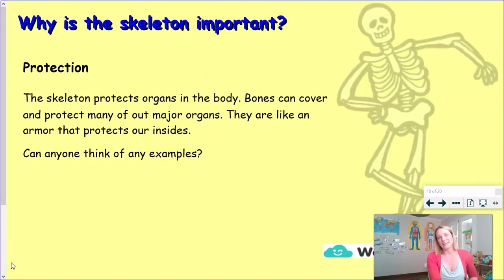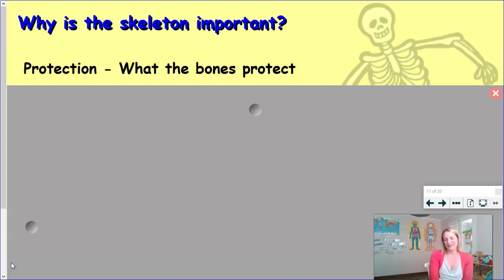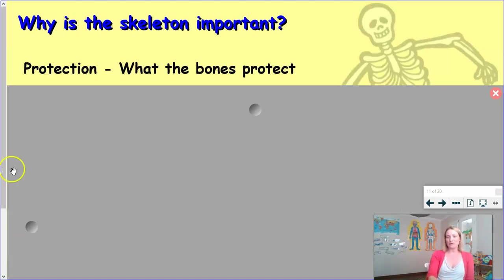And finally, our skeleton is very important because it protects us. The skeleton protects the organs of your body — bones can cover and protect many of our major organs, like an armor on the inside. Can you think of any examples of specific bones purely designed to protect an organ of your body? Some of them are very obvious, others a little bit more tricky. So let's have a look at what the bones protect.